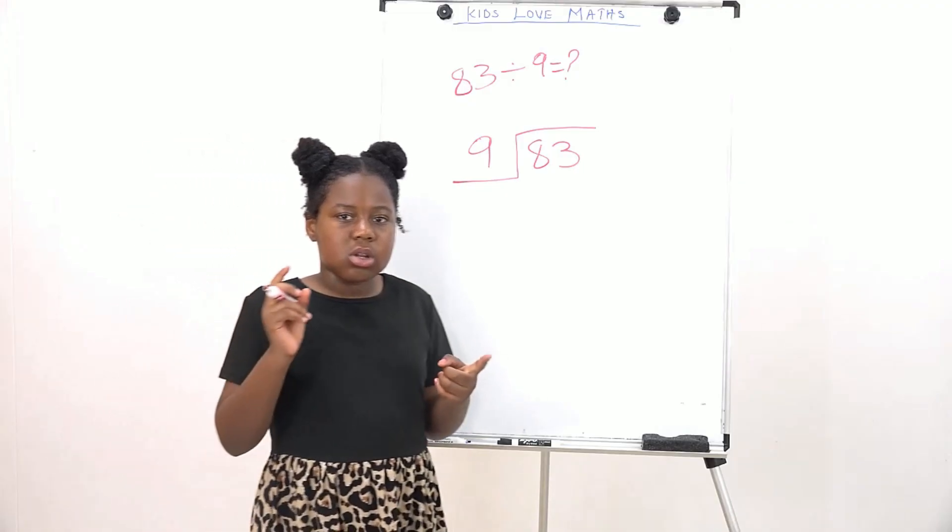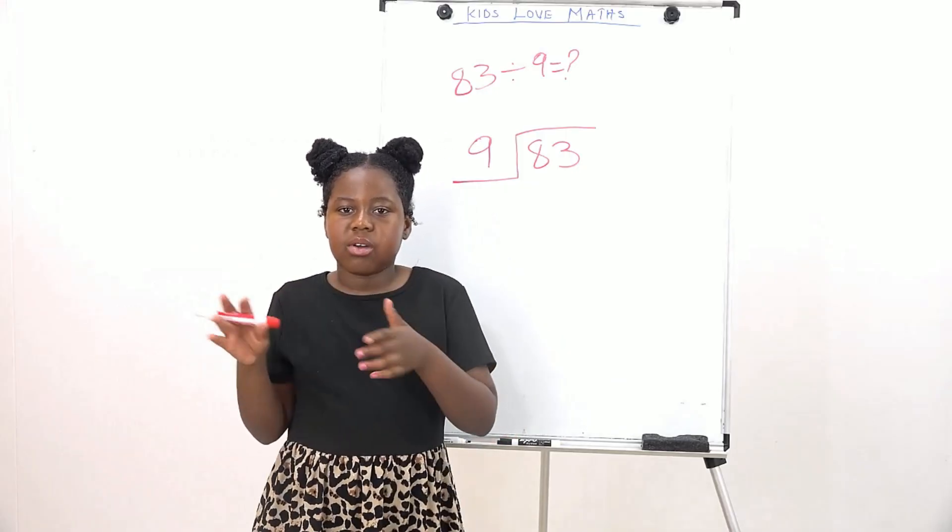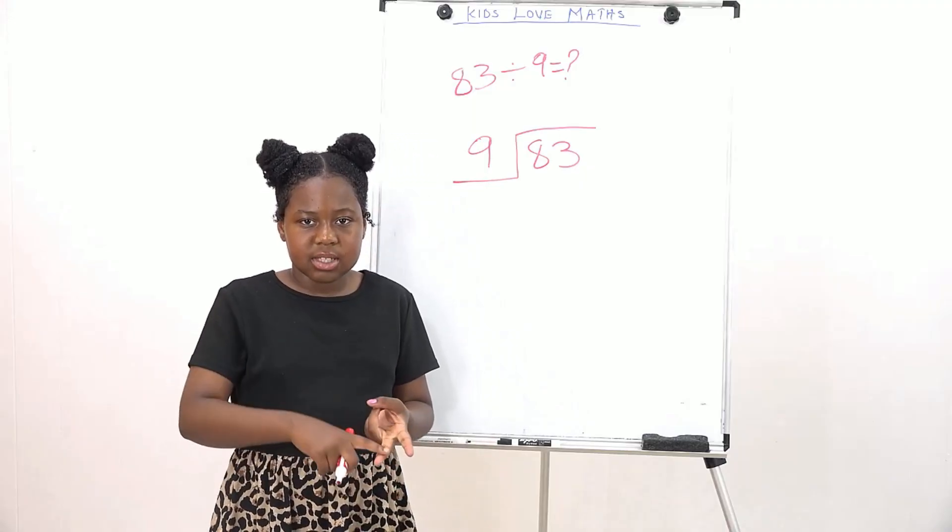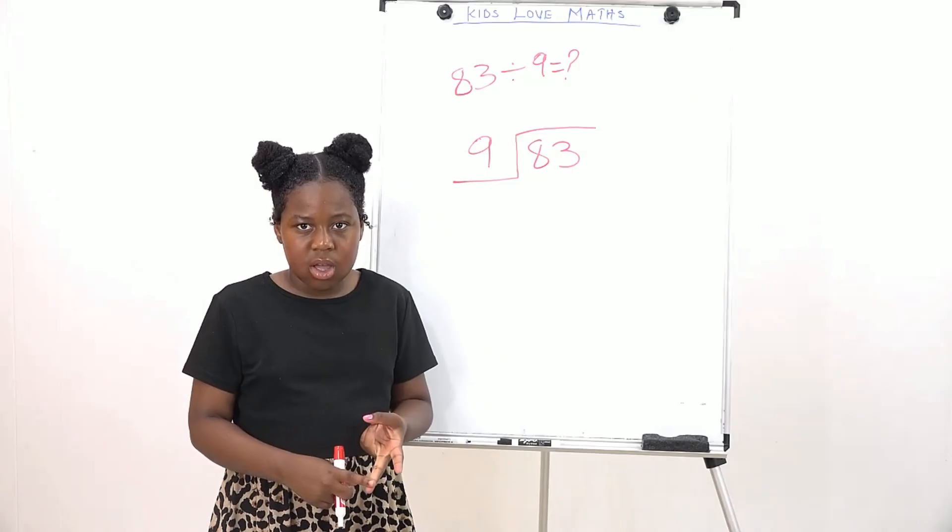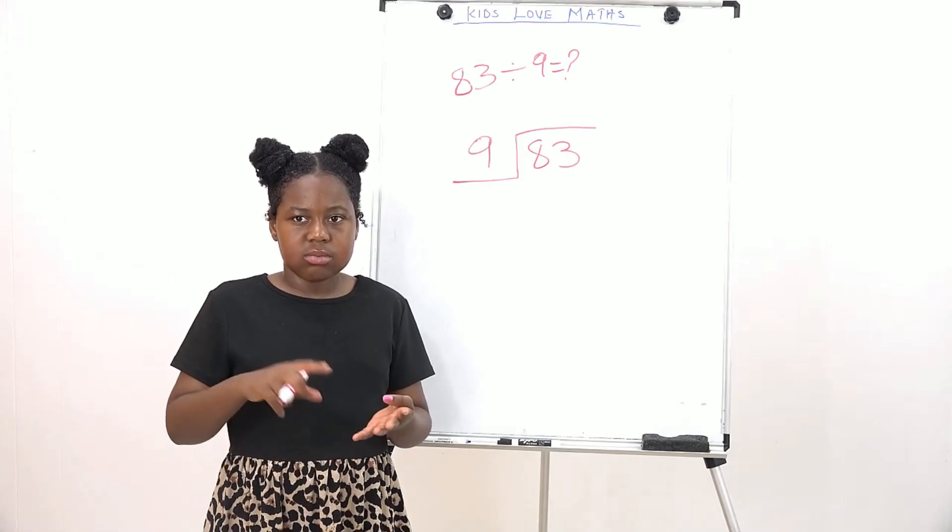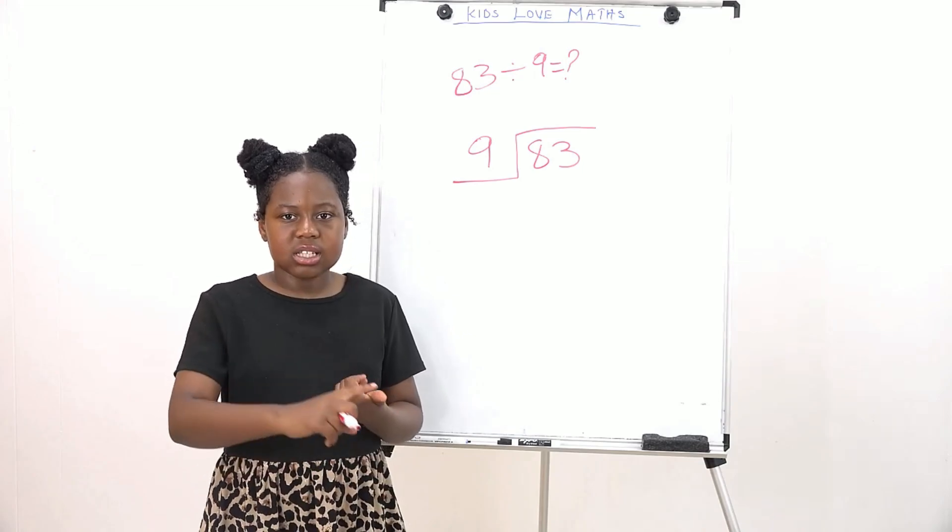So, we can do 9 times... Let's start from 9 and above. 9 times 5 is 45, 9 times 6 is 54, 9 times 7 is 63, 9 times 8 is 72, and 9 times 9 is 81.